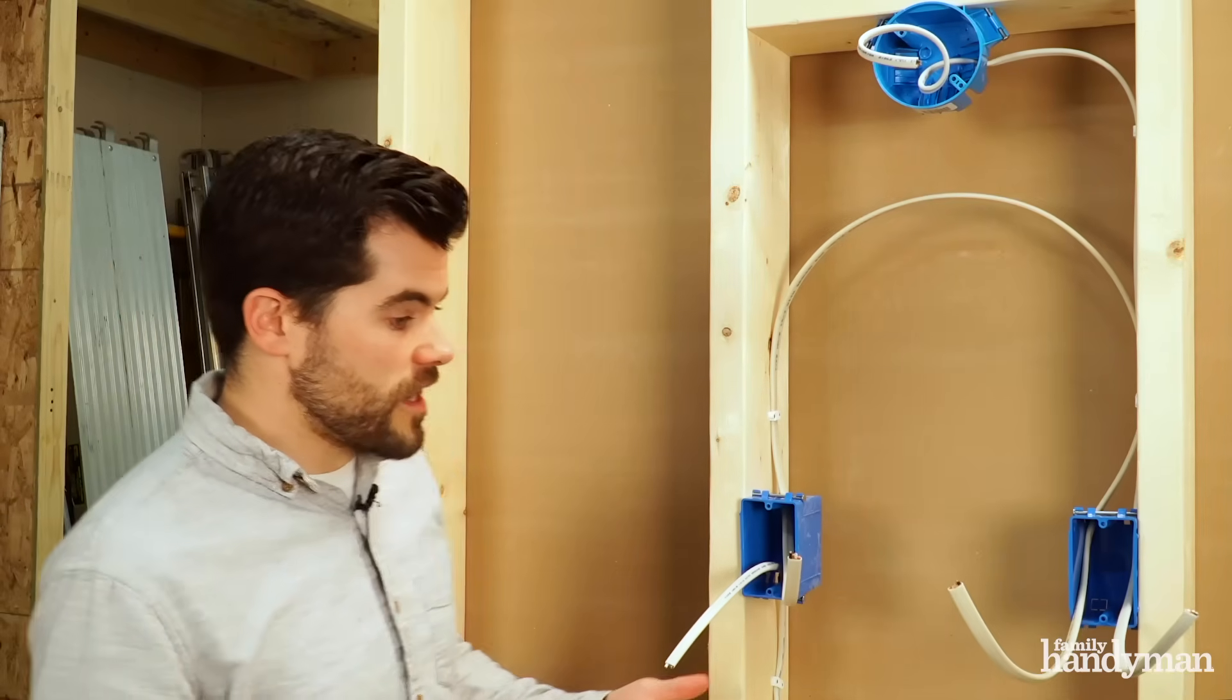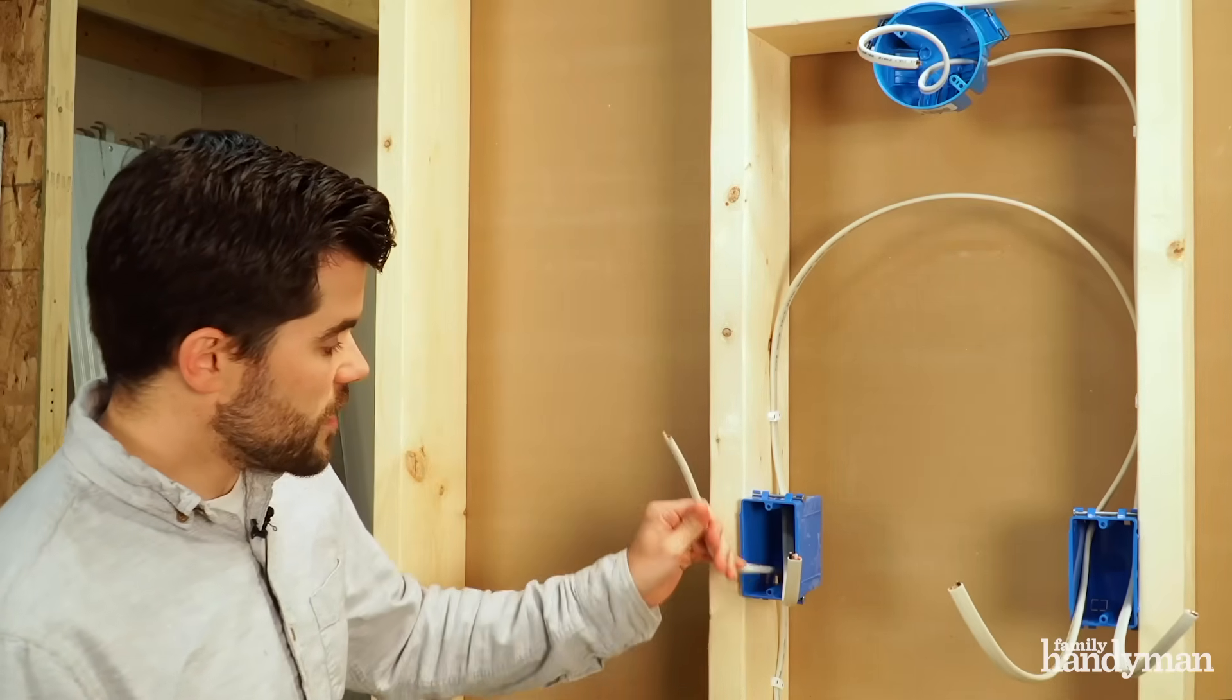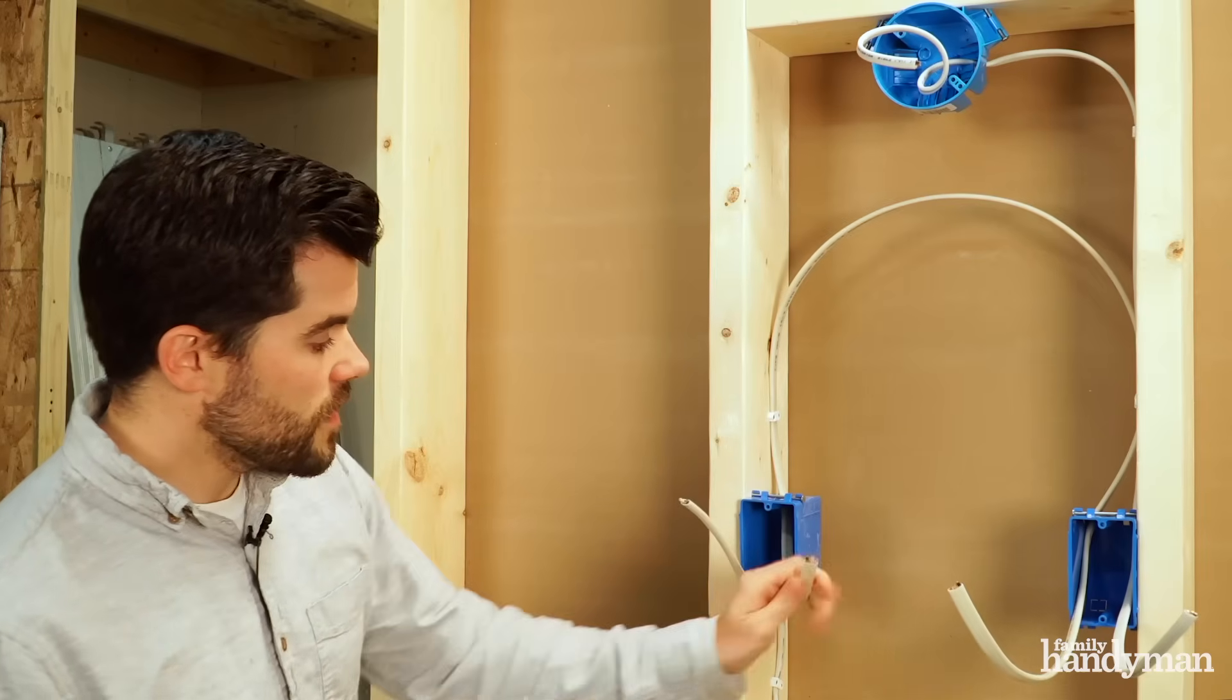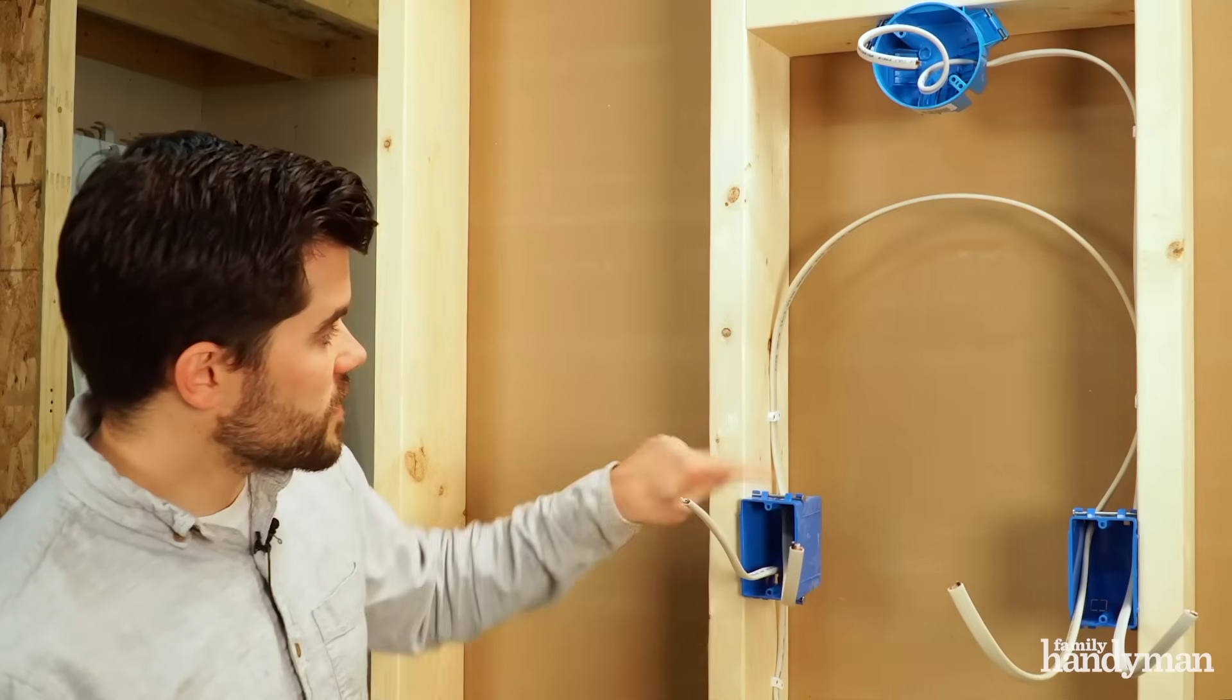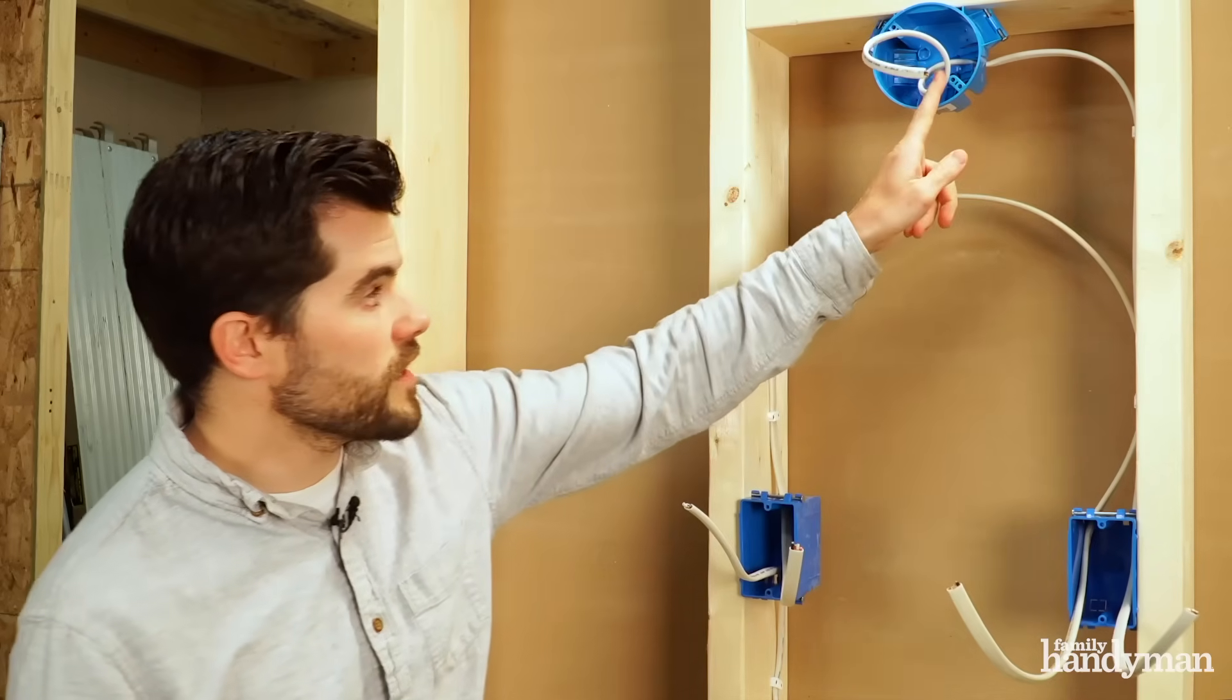Now there's quite a bit of wires going on here and to avoid any confusion, you might want to label them. So label this one power coming in. This wire right here is the common between the two switches and this wire right here goes to the light.